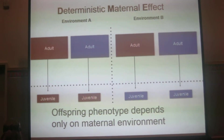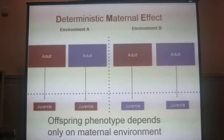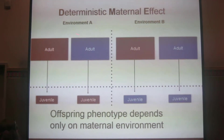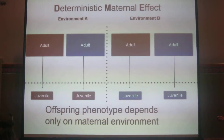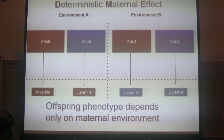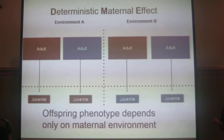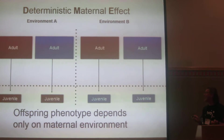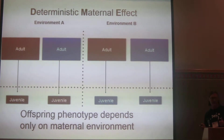I'm going to contrast this with other types of strategies, including the idea of a deterministic maternal effect. This whole slide is one genotype. In environment A, regardless of the parental phenotype — red or blue — they produce red offspring. In environment B, regardless of the parental phenotype, they produce blue offspring. This is sometimes called transgenerational plasticity; we call it a deterministic maternal effect. The idea is that offspring phenotype depends only on the maternal environment.